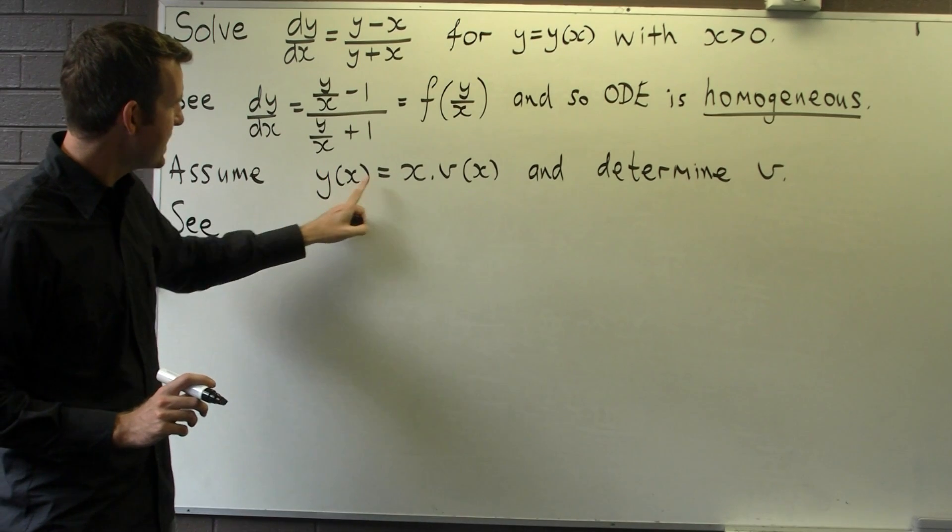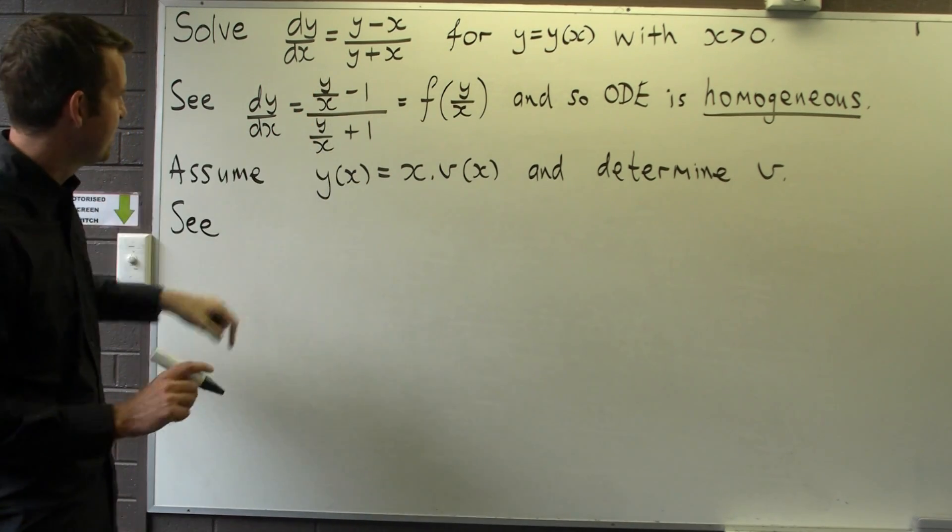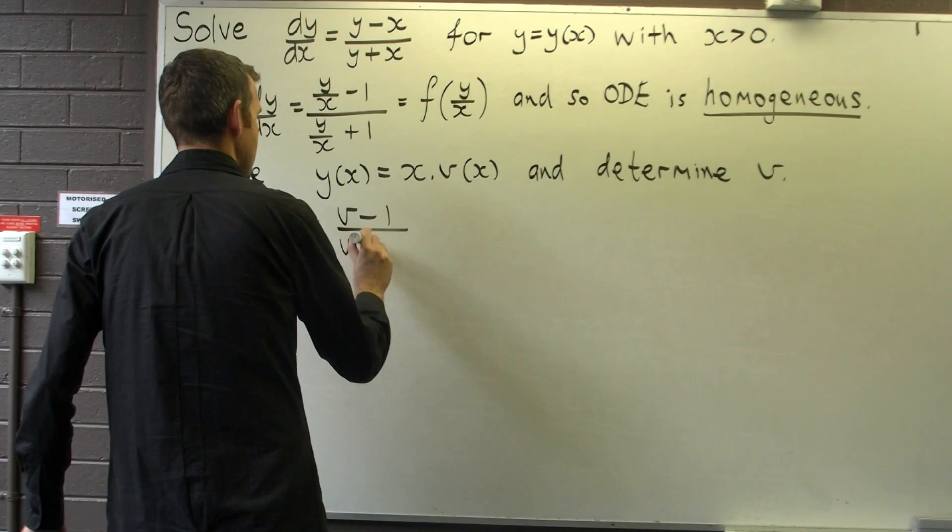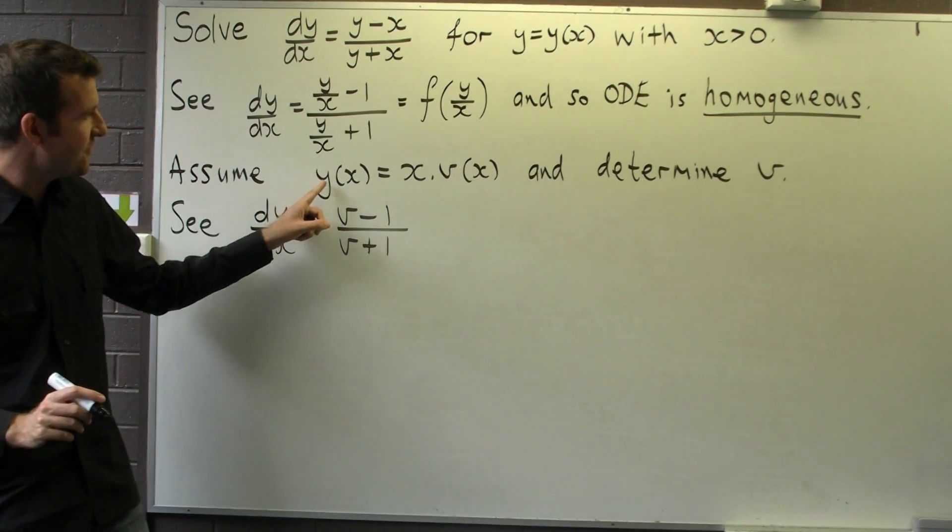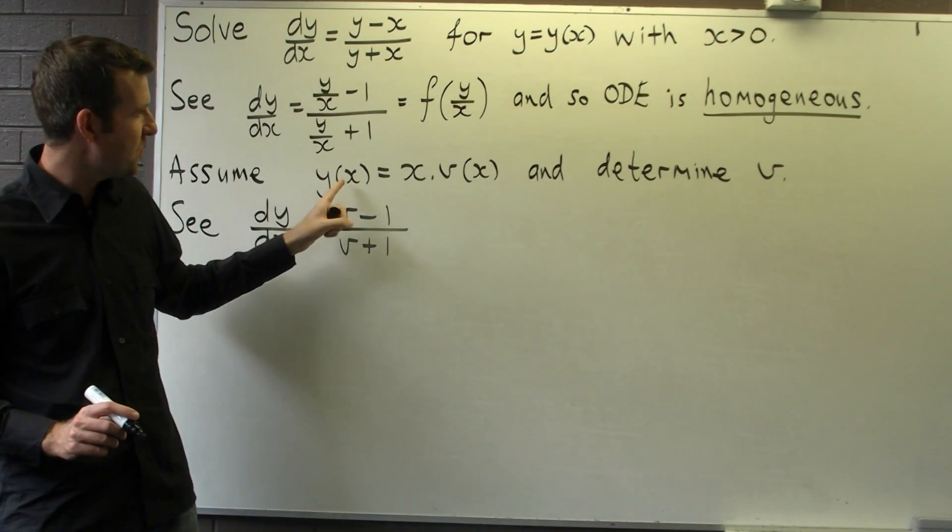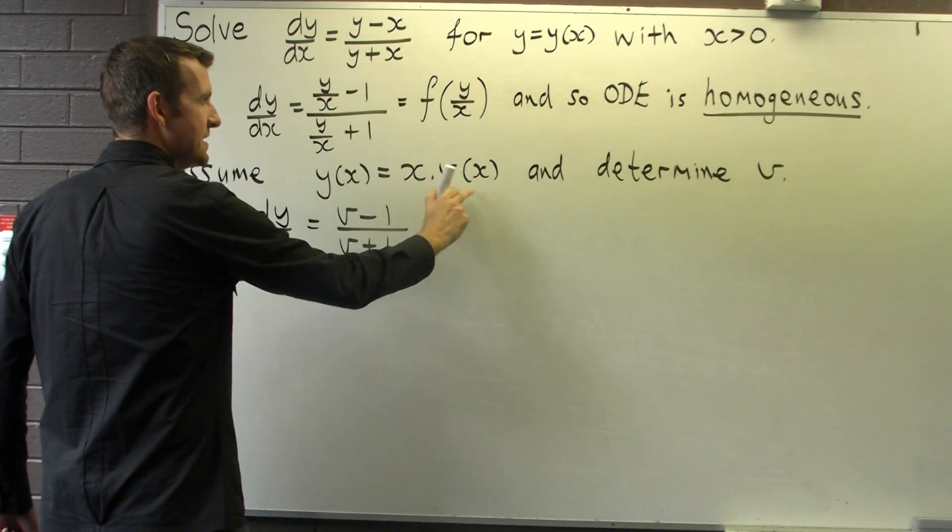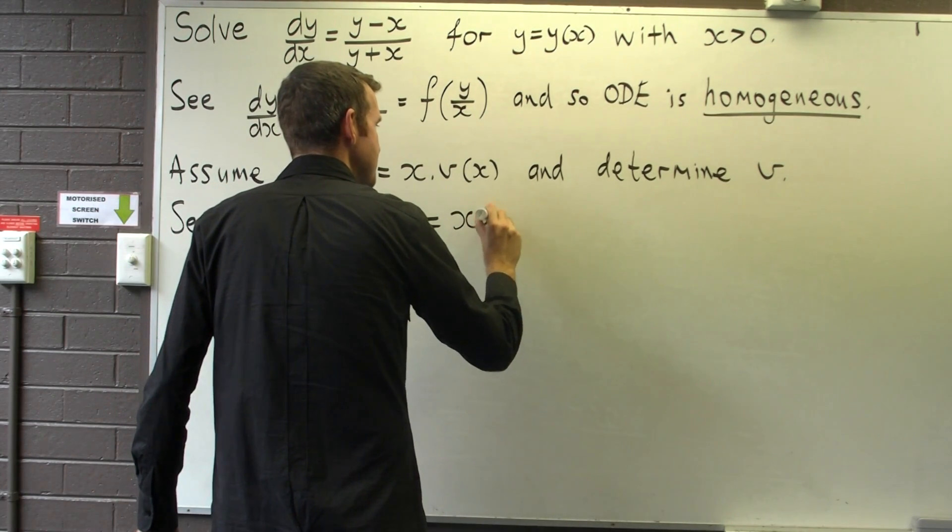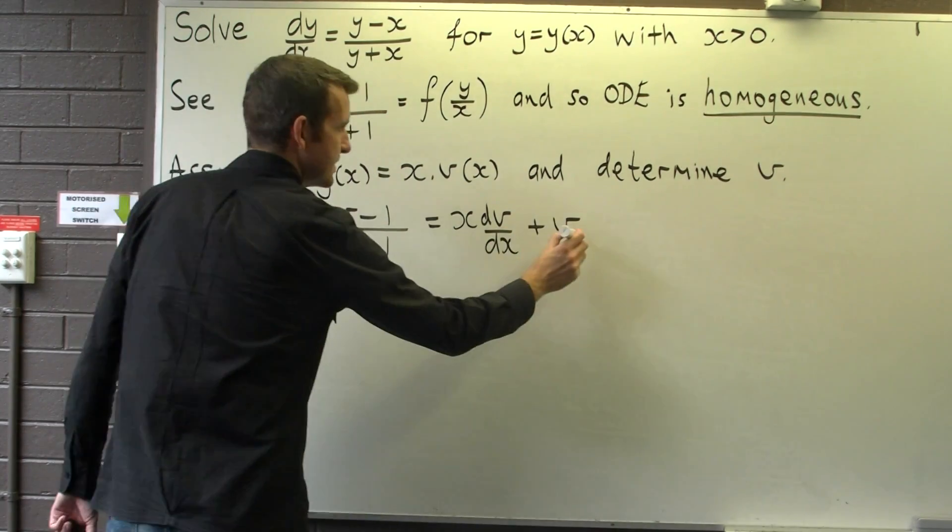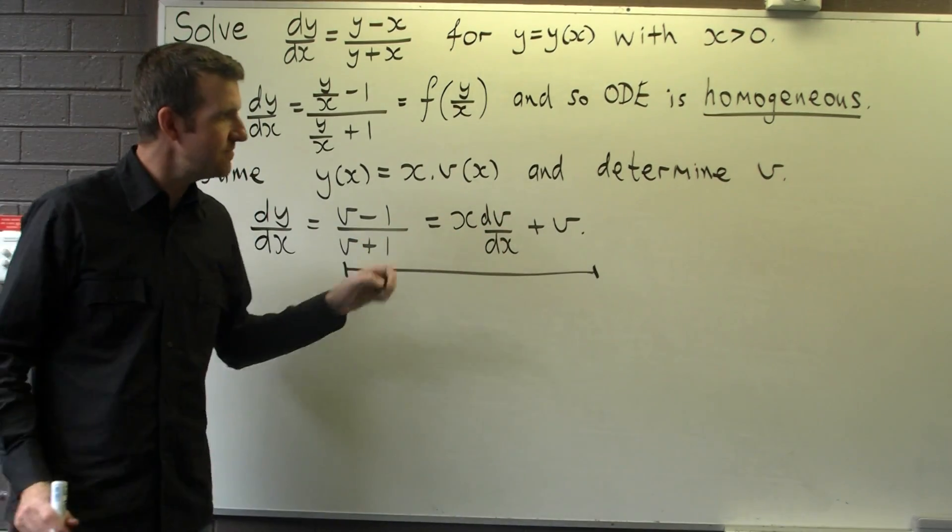So, if y equals x times v, v equals y on x. So I'm going to go back here and substitute v for y on x. And secondly, I'm going to differentiate both sides of this particular format here. Now, to do that, to find dy/dx, I need to use the product rule here. So if I differentiate here, I get dy/dx. If I differentiate here, I'm going to get x times dv/dx plus v.